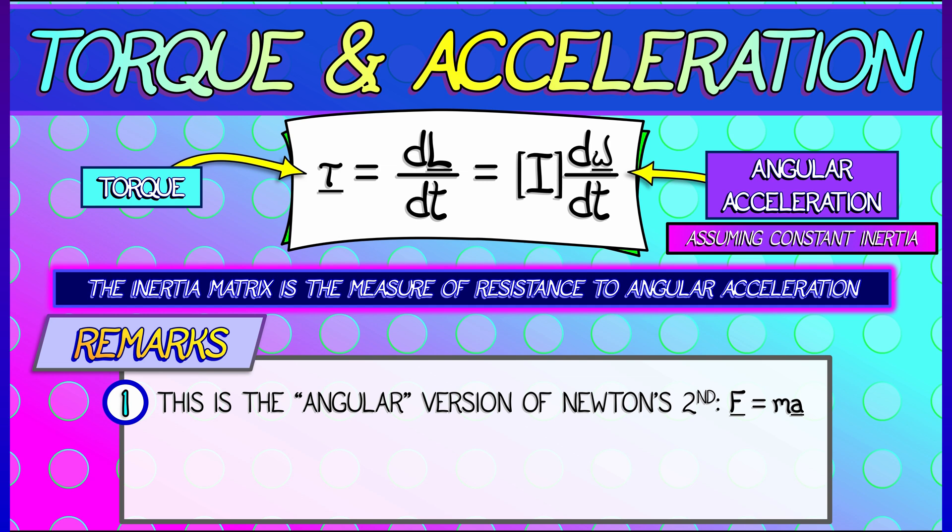We have an angular acceleration, dω/dt, and an angular mass—that's the inertia matrix. But it's a matrix. That's cool.